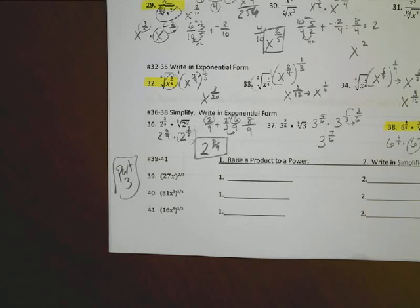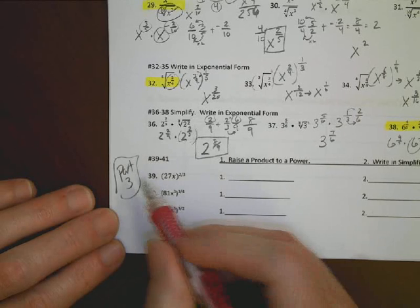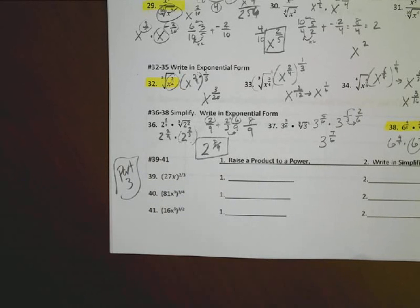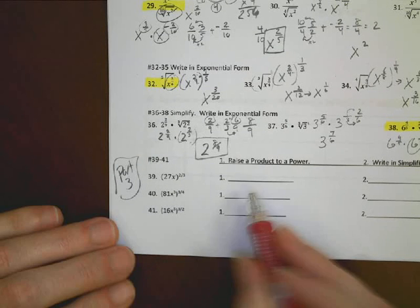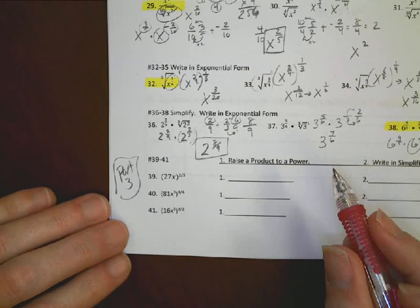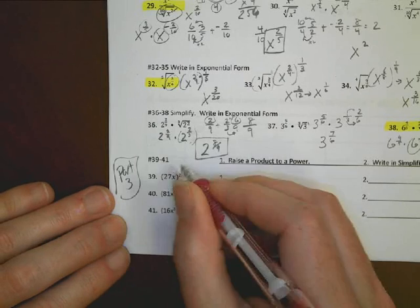All right, picking up again. Here we go. This is part 3 of your Math 2 Unit 10 test review. So we have to change these things around a little bit. I'm going to raise the product to power and then simplify it by writing it in radical form.